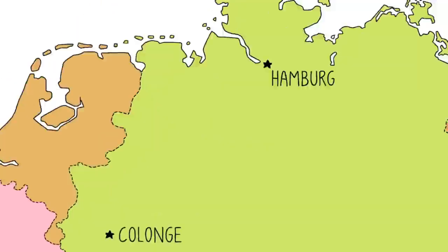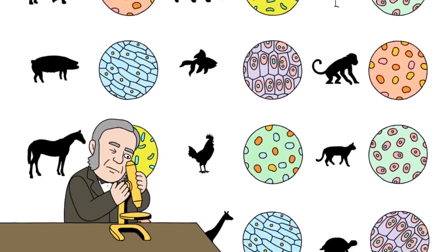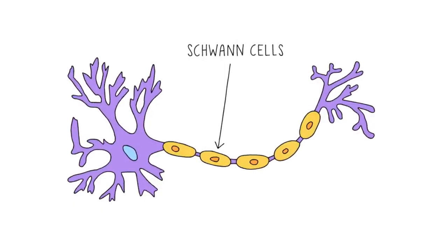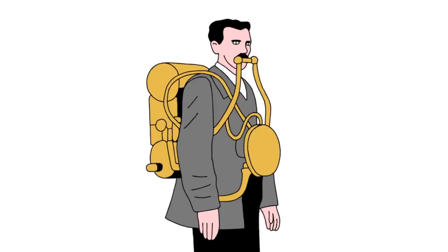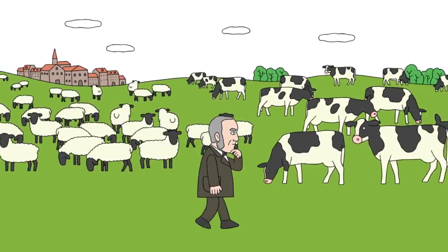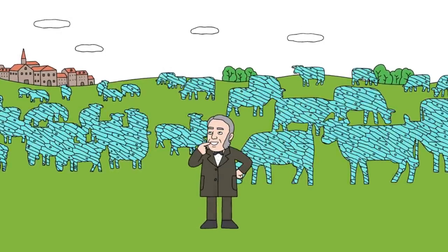At the same time, on the other end of Germany was Theodor Schwann, a scientist who not only studied slides of animal cells under the microscope and got a special type of nerve cell named after him, but also invented rebreathers for firefighters and had a kickin' pair of sideburns. After studying animal cells for a while, he too came to the conclusion that all animals were made of cells.